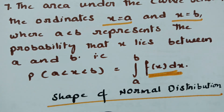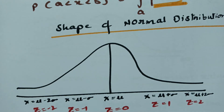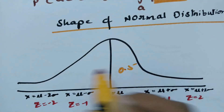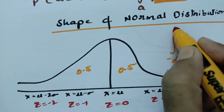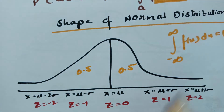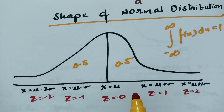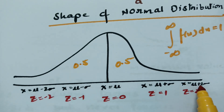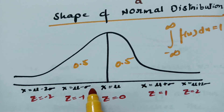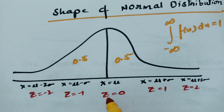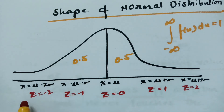The shape of the normal distribution is the bell-shaped curve, with 0.5 on each side, and the total probability from −∞ to +∞ is always equal to 1. On the x-axis, the center is x = μ, then μ + σ, μ + 2σ to the right, and μ − σ, μ − 2σ to the left. Comparing with the z-axis, z = 0 at center, then z = 1, 2, 3 to the right and z = −1, −2 to the left. You can easily plot all values after converting to the x-axis or z-axis.